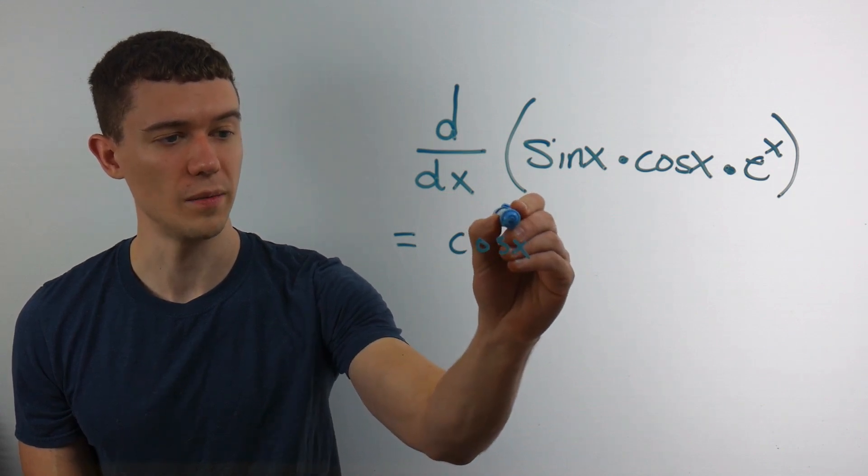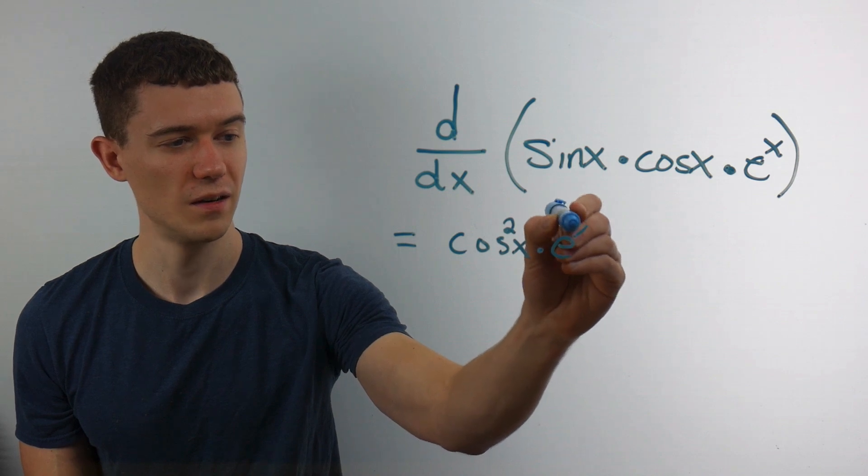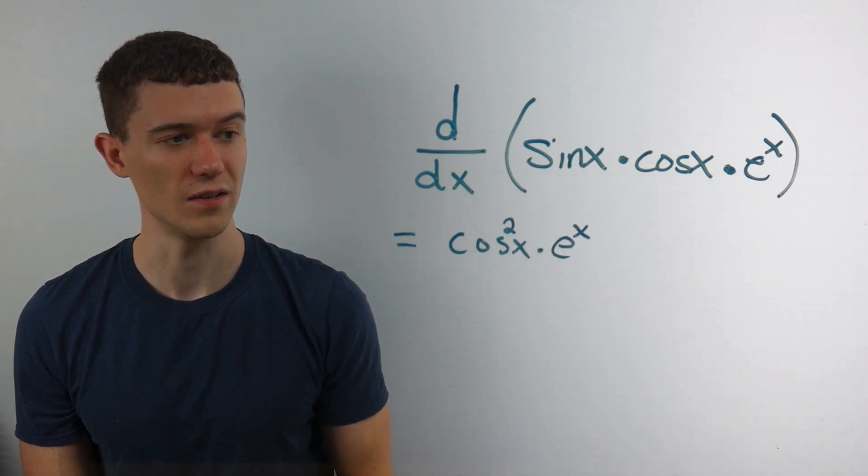Well, it's already cosine. So maybe I'll just say squared there. I'll skip a little step if you don't mind. Cosine times cosine is cosine squared.